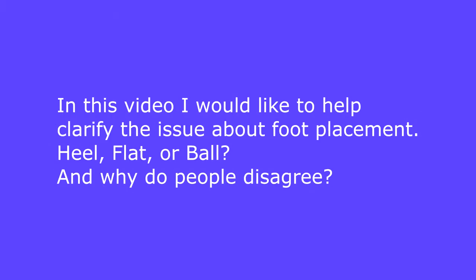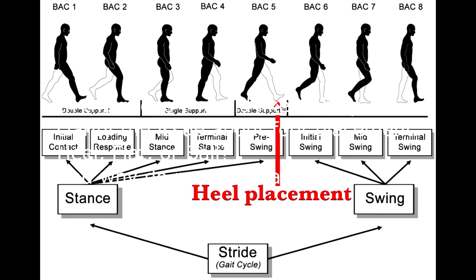In this video I would like to help clarify the issue about foot placement — heel, flat, or ball — and why people disagree. Let's start with what has been generally accepted. This is an image of the standard gait cycle from the most comprehensive scientific book on gait by Jacqueline Perry. It clearly shows the heel as the point of initial contact. If you look up any images about the human gait cycle you won't find any disagreement that heel placement is normal in human walking gait.